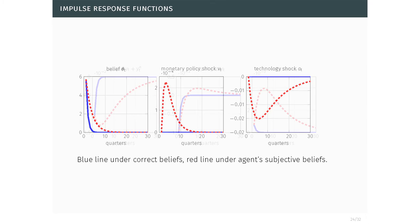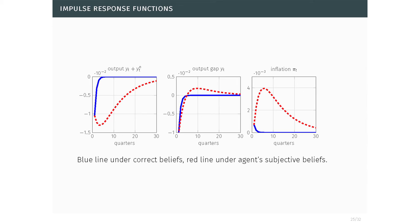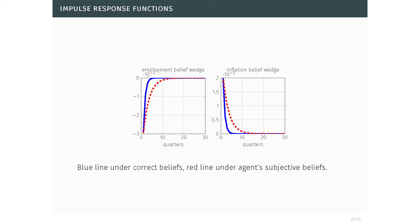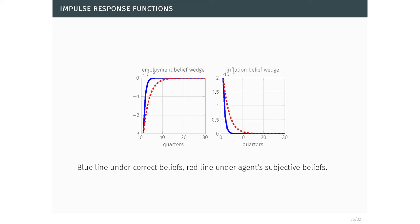Under the worst-case measure, after a belief shock, output goes down and inflation goes up dramatically — that represents the shape of the agents' worst-case fears. The belief wedges show subjective employment going down and inflation going up. This sign pattern depends on the parameterization: alternative parameterizations could produce positively correlated movements in employment and inflation distortions, but the survey data tells us that is not the preferred specification, since in the data the survey answers are negatively correlated.